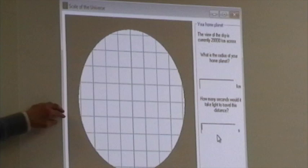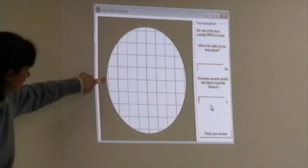To find the radius of the whole planet, what I probably would want to do is find the diameter. So I count how many squares it takes to go from this edge of the planet.